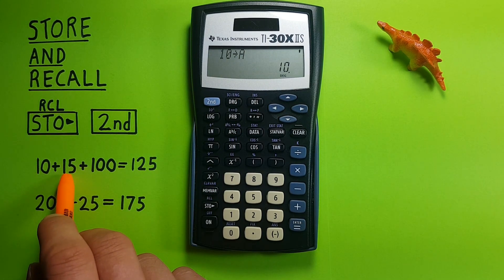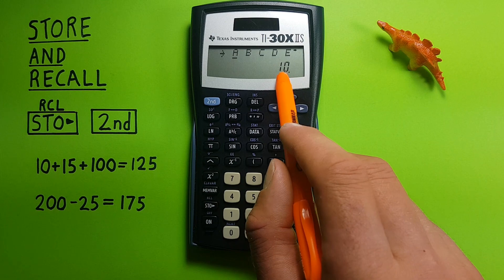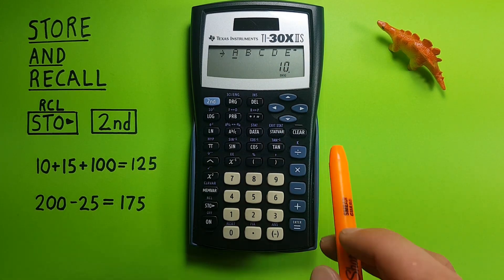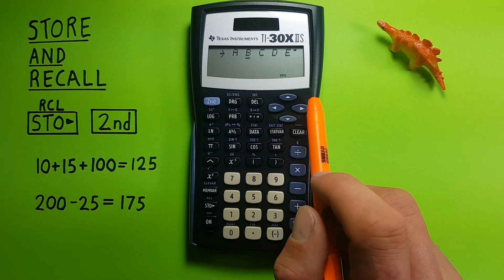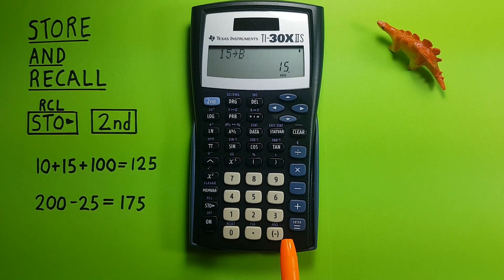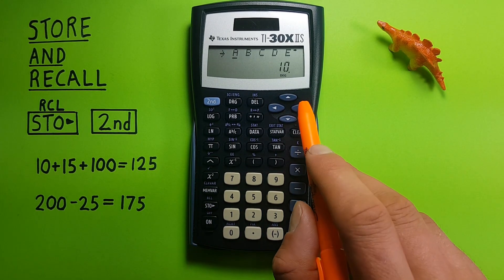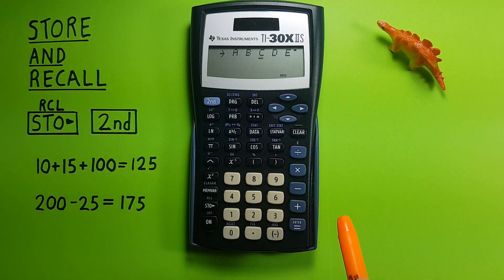Now let's store 15. We put 15 on the top and hit the STO key. You can see A has 10 in it, and down here it shows what is stored in each slot. We move over to B — you can see it has nothing stored right now — and hit enter: 15 into B. Let's also store 100: place it on the screen, hit the STO key, move over to C, hit enter, and we now have 100 stored as C.